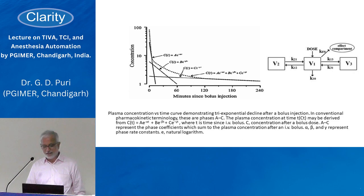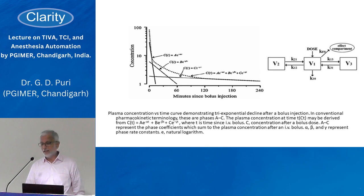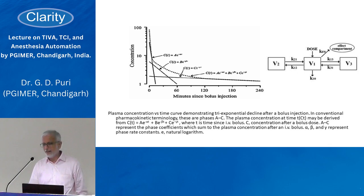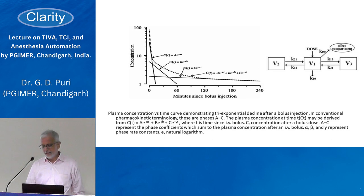The concentration immediately falls, then falls slowly, then very slowly later on. This initial fast phase represents the fast equilibrium compartment, and the slower phase the slow equilibrium compartment. The initial concentration in the blood is determined by the loading dose you gave divided by the volume of distribution — not exactly equal to blood volume but a little more.